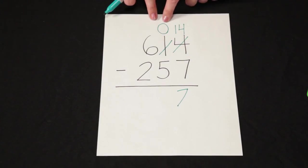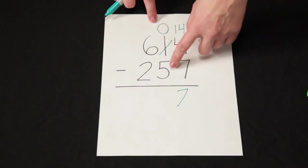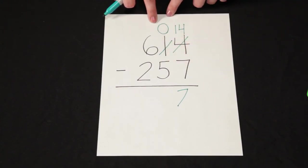Now I'm going to subtract the tens. I have 0 tens and I need to take away 5. I can't do that.